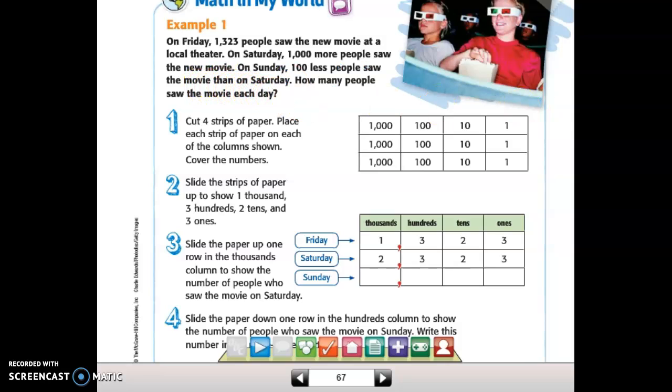Okay, first let me highlight the information in the problem. Friday, 1,323. Saturday, 1,000 more people saw. So I want to highlight that more because that's a key word that tells us what kind of math we're going to do. Sunday, 100 less. And again, I want to highlight the word less. It tells me what kind of math I'm going to do. So those are the key pieces of information.